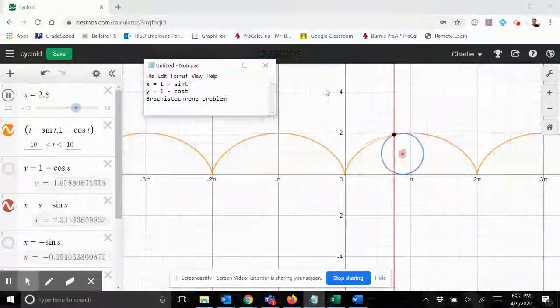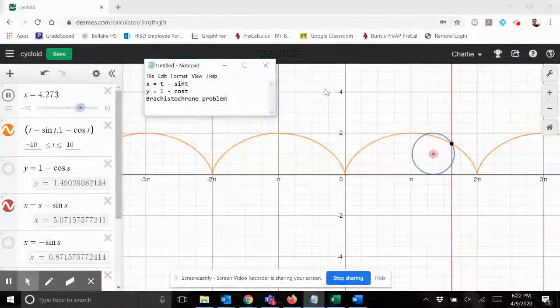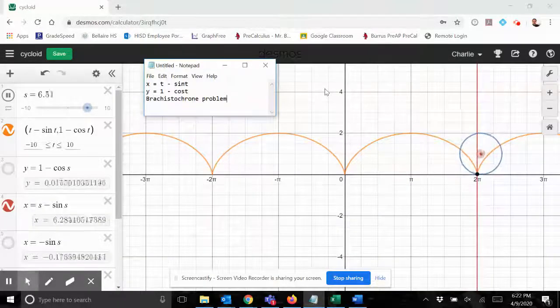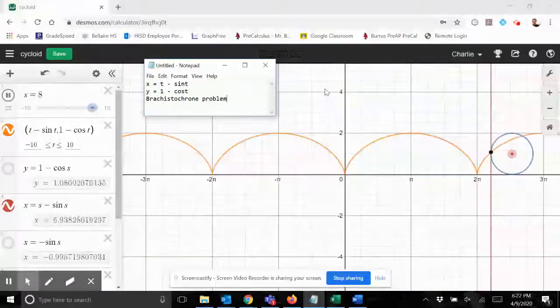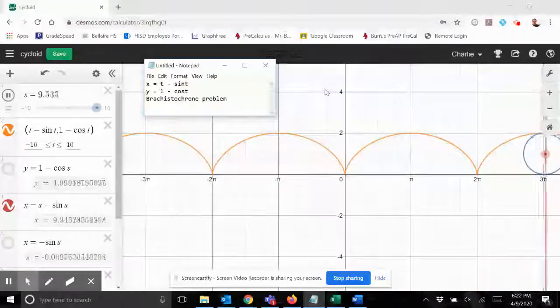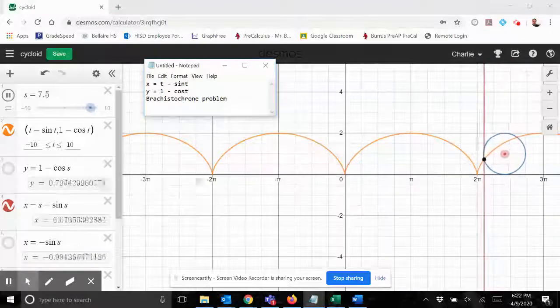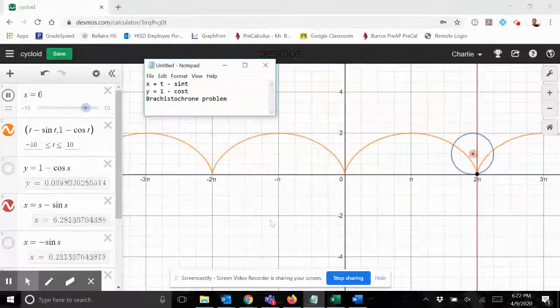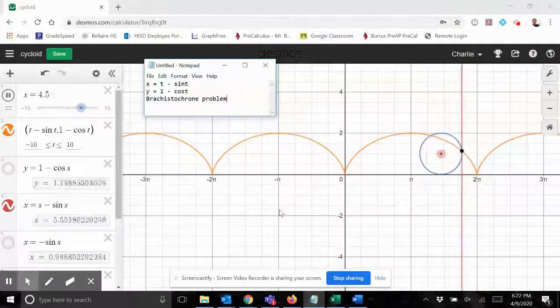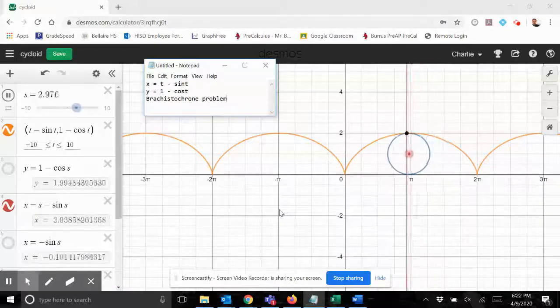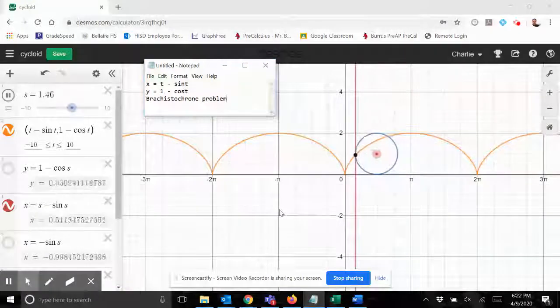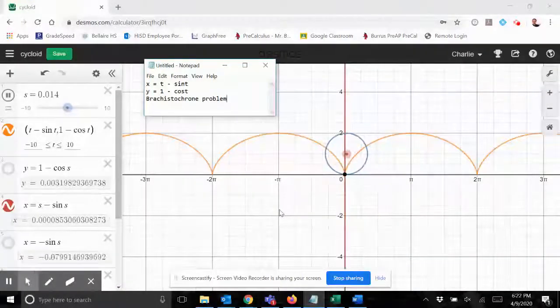It basically says if you take a bead on a wire and you slide it down the wire, and the only force on that bead is gravity and it's a frictionless wire so the wire is not slowing it down at all, what will be the shape that will get you from point A to point B the fastest? And as it turns out, it's a cycloid - it's an upside down cycloid. Which is really weird. It seems to me like a totally different context and different environment for this curve to show up in, but sure enough it does.